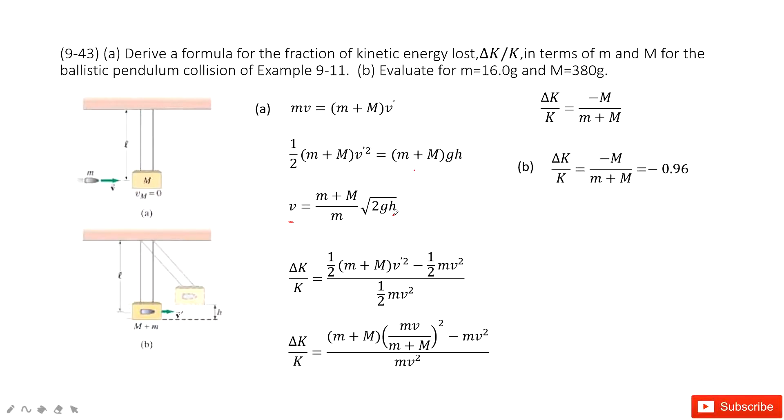And now we can do the part A. We need to find the fraction for the velocity. So the loss of the energy is the final energy. The final energy is the box with the bullet. The velocity is v, right? Minus initial velocity.